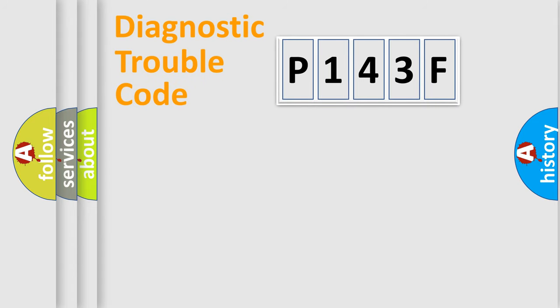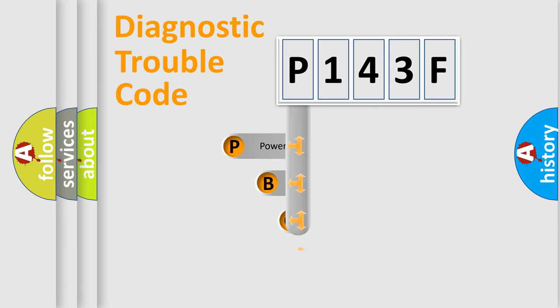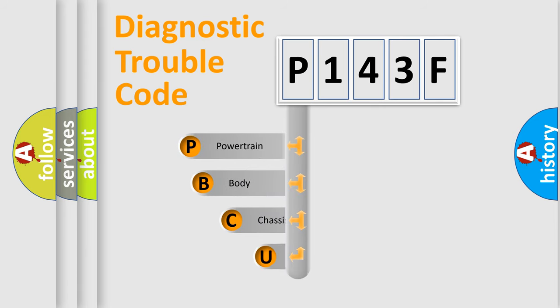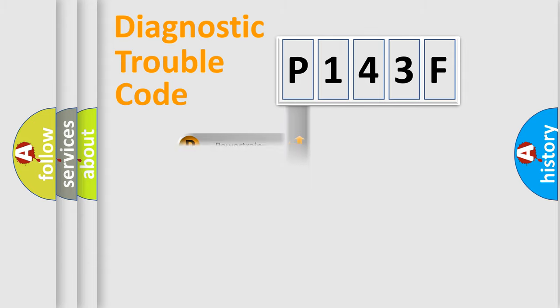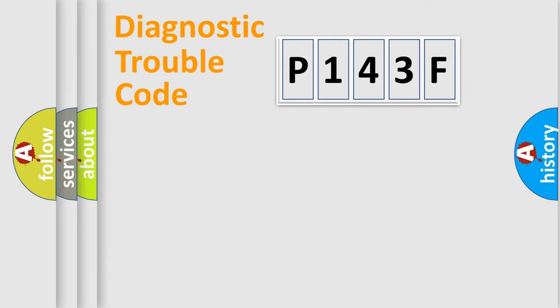Let's do this. First, let's look at the history of diagnostic fault code composition according to the OBD2 protocol, which is unified for all automakers since 2000. We divide the electric system of the automobile into four basic units: Powertrain, Body, Chassis, and Network.